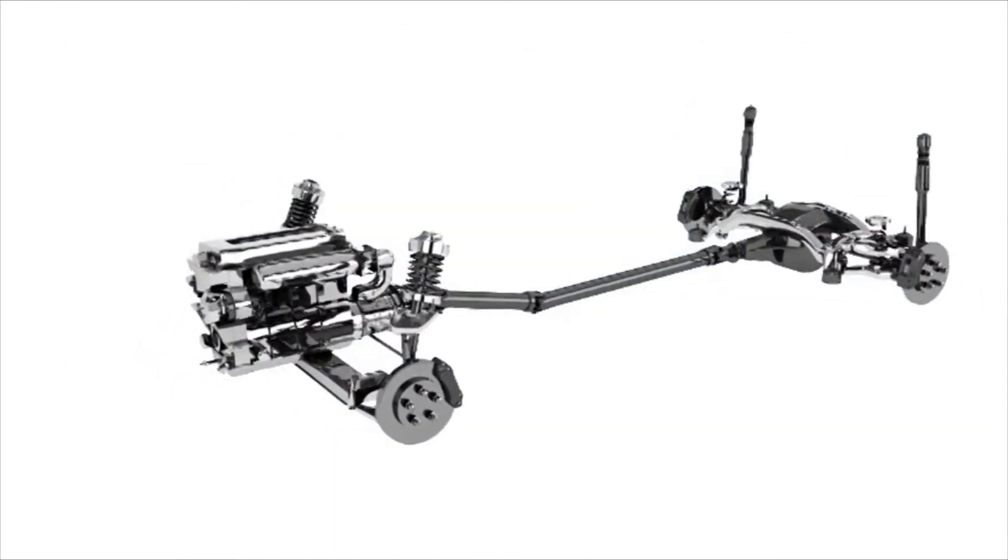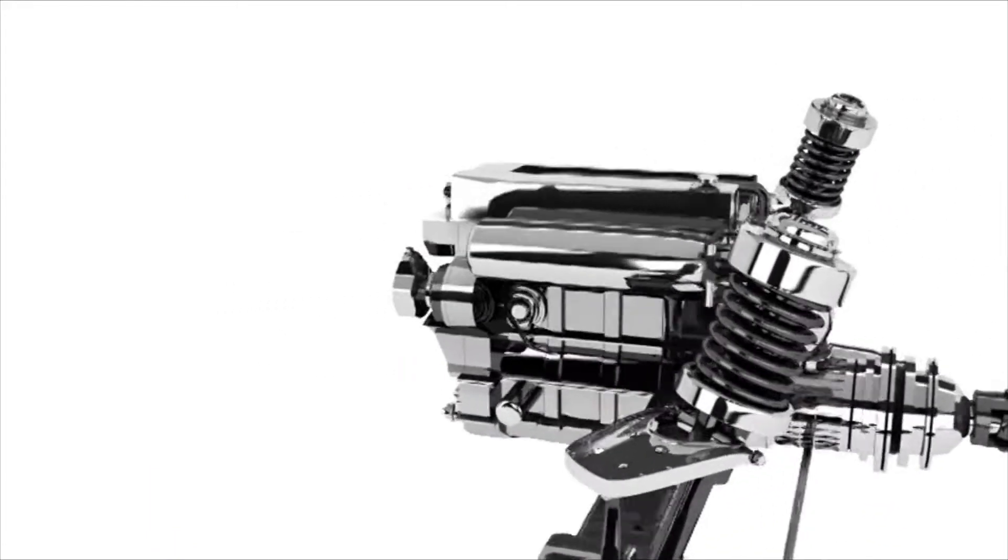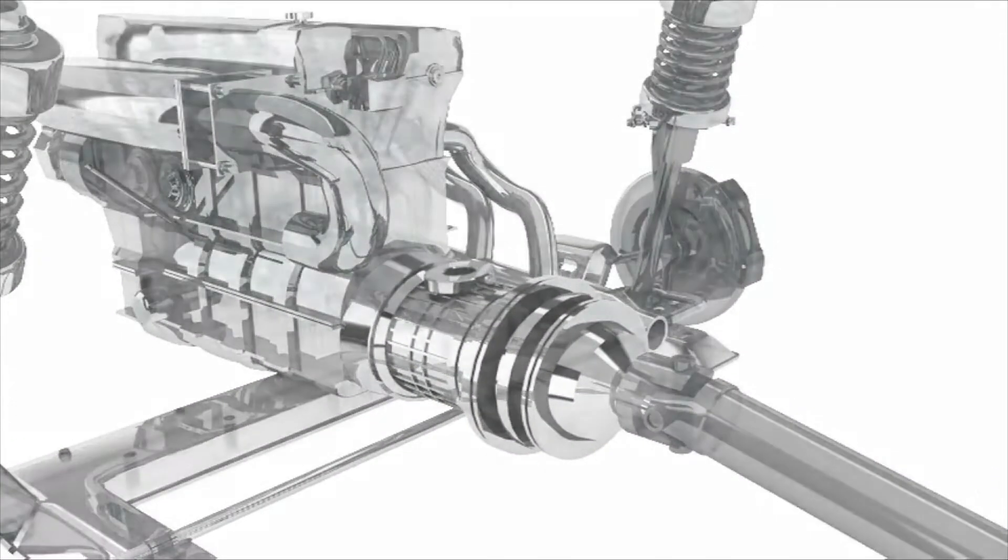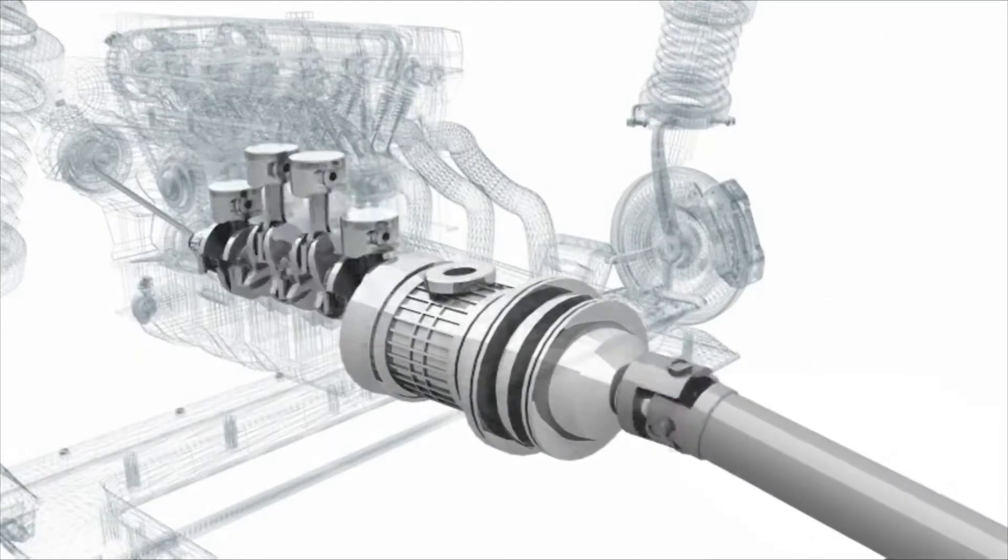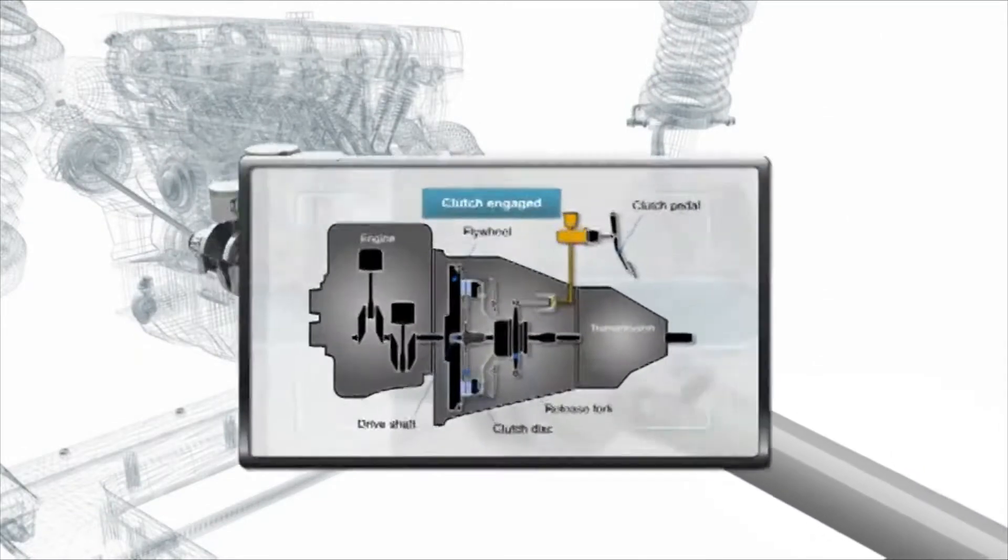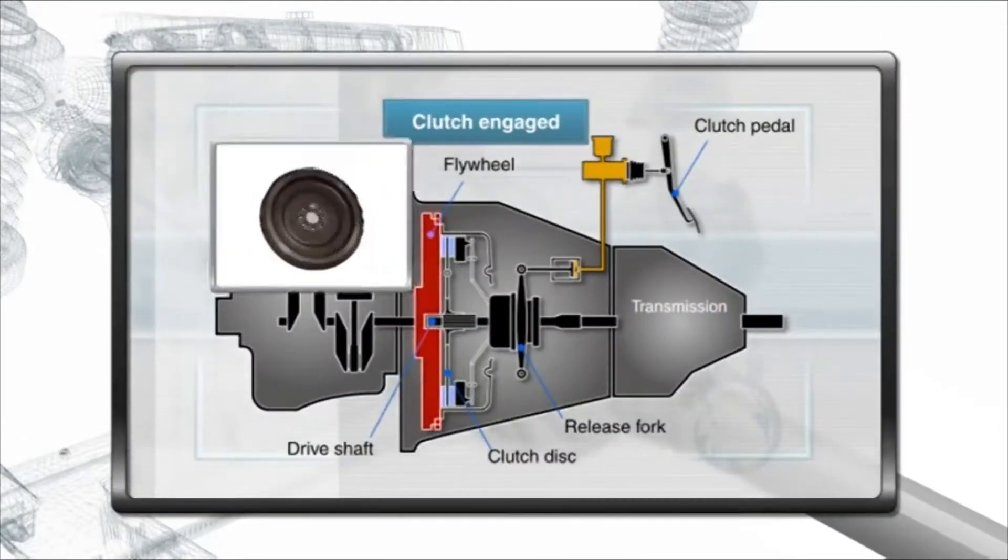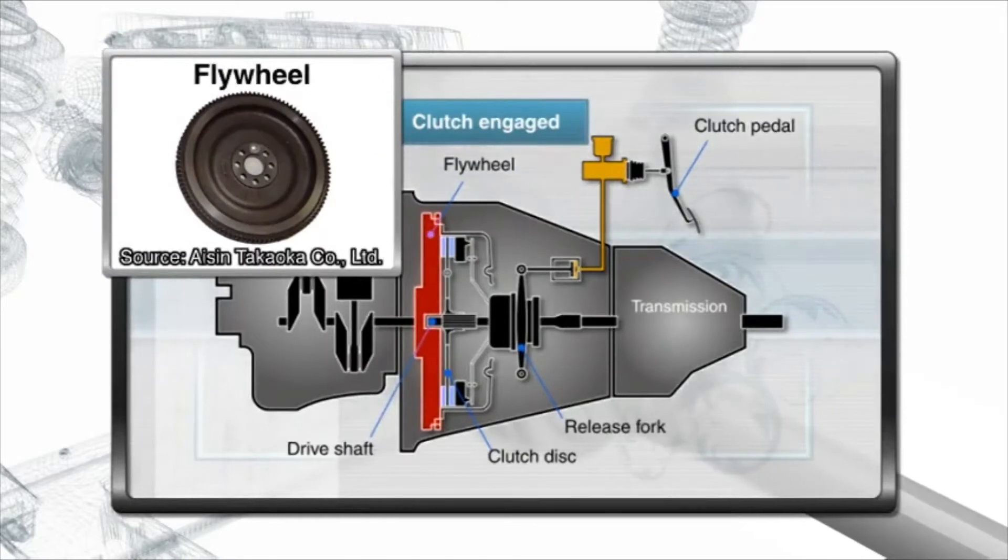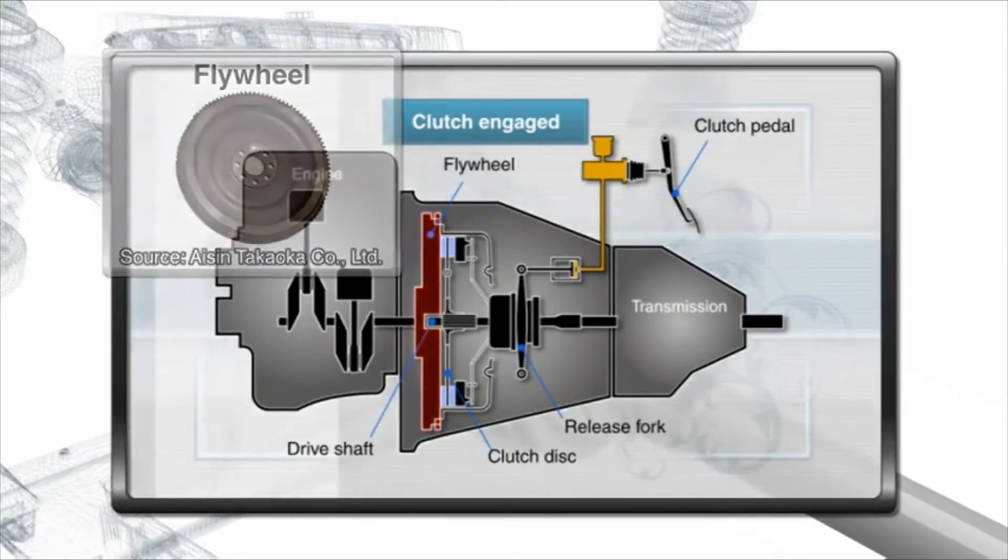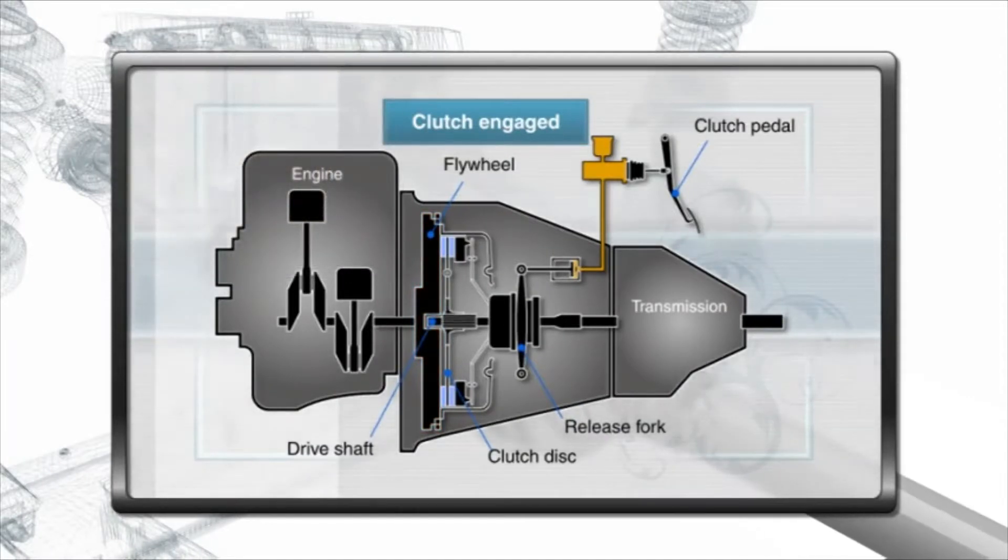First, let's take a look at how a manual transmission FR is powered. The power from the engine travels to the clutch via the flywheel. The clutch is responsible for transmitting the power smoothly and also functions as an on-off switch.